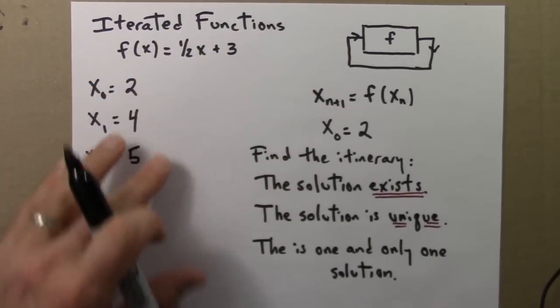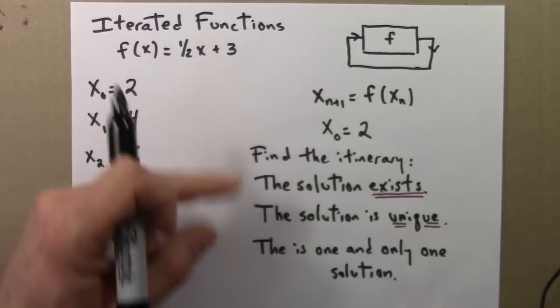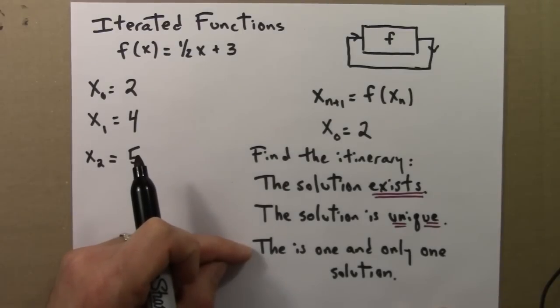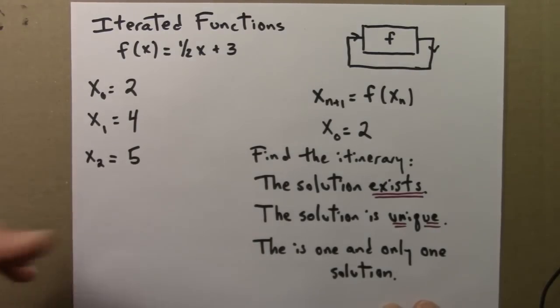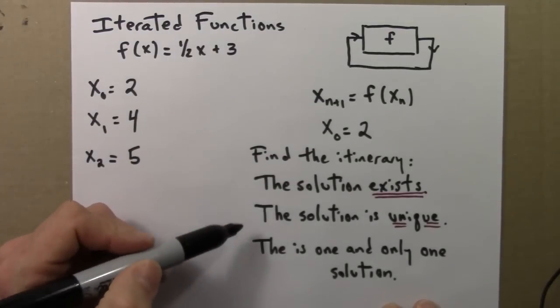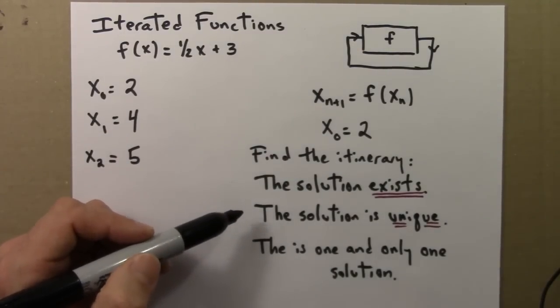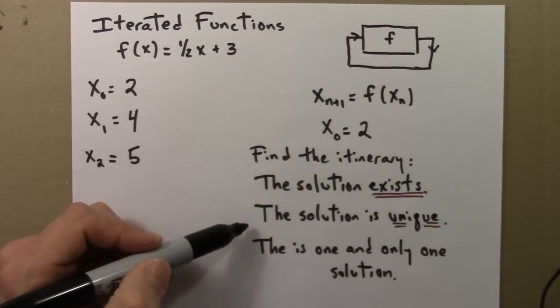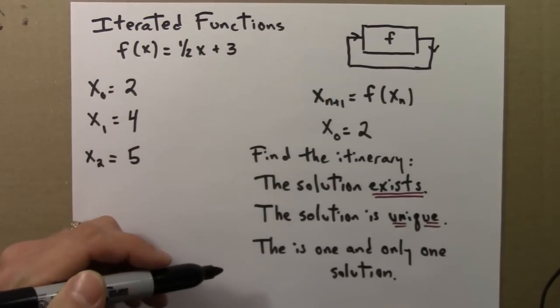I hope for this iterated function example, this statement seems obvious enough to be almost pointless. But when we look at differential equations, the existence and uniqueness might be a little bit more subtle. So I think it's good to see the notion of existence and uniqueness first in this simpler setting.